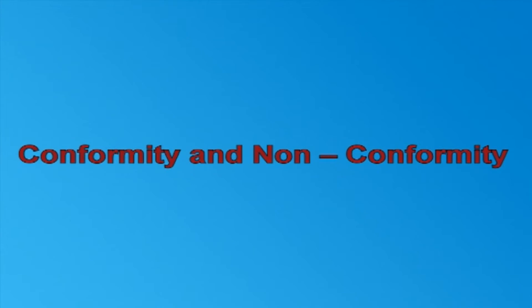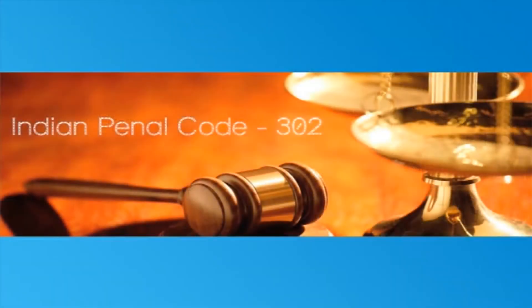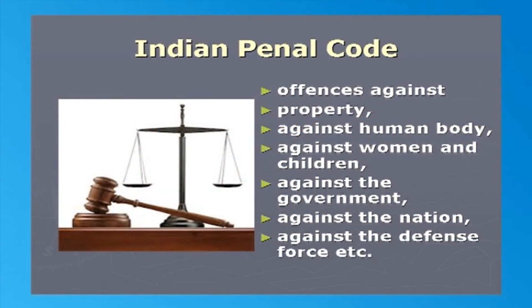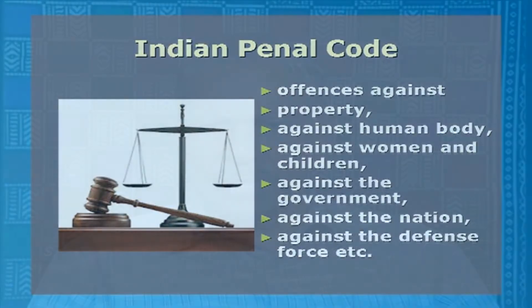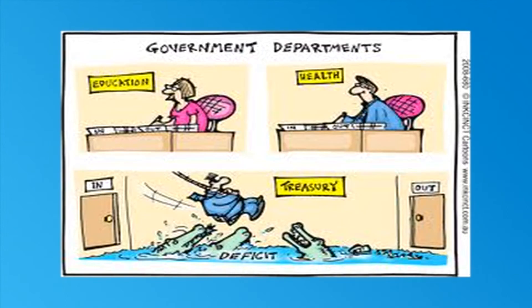Let us now pass on to conformity and nonconformity. An act becomes a crime when it is not only forbidden by the society, but also when a certain punishment is prescribed in the law books. The Indian Penal Code has defined various categories of crimes such as offences against property, against the human body, against women and children, against the government, against the nation, against the defence force, etc. It has prescribed appropriate punishments for each category of crime. Every organization — family, society, school, government and government departments, the corporate and banking sectors — all have their own rules and regulations. Conformity to these rules and regulations is generally expected from all the members.